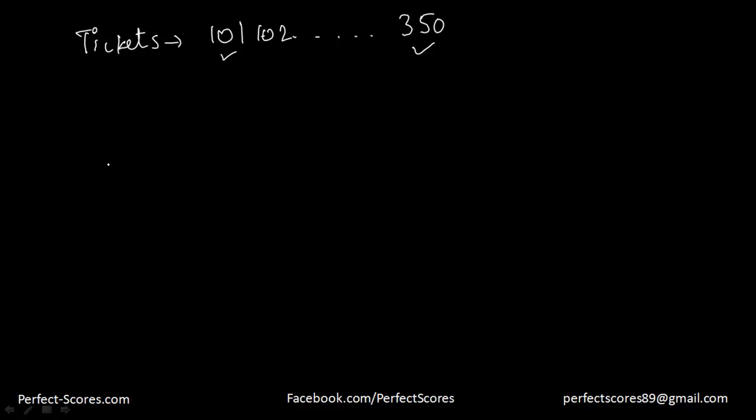The question is asking what is the probability that a ticket selected at random will have hundreds digit as 2? Now what actually is hundreds digit? Let's suppose I have a number like 101. This over here is the units digit, this over here is the tens digit, and this over here is the hundreds digit.